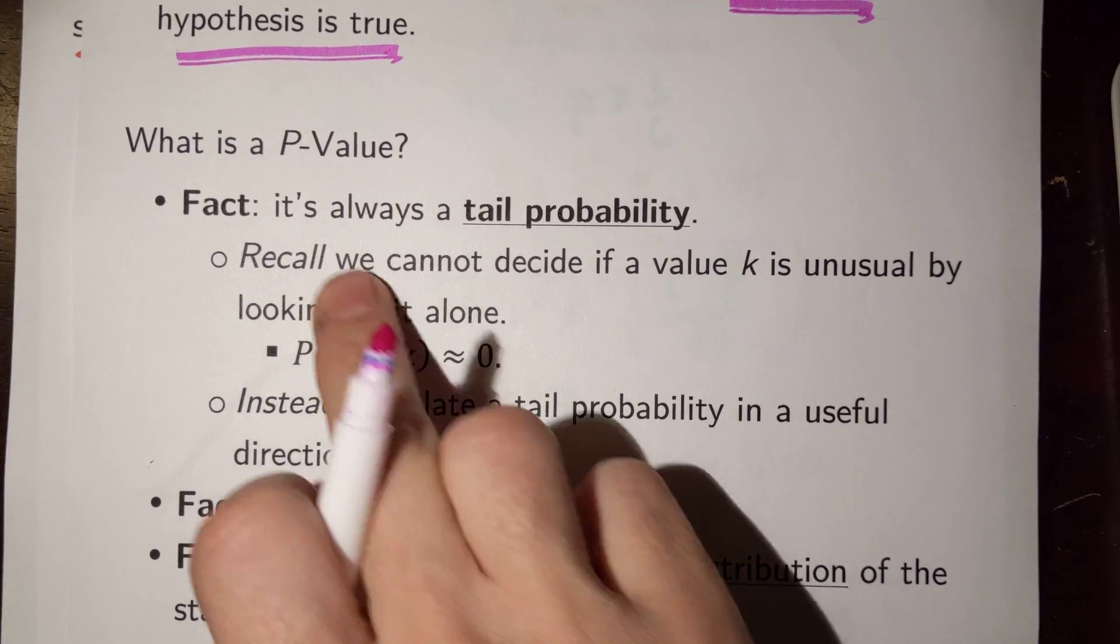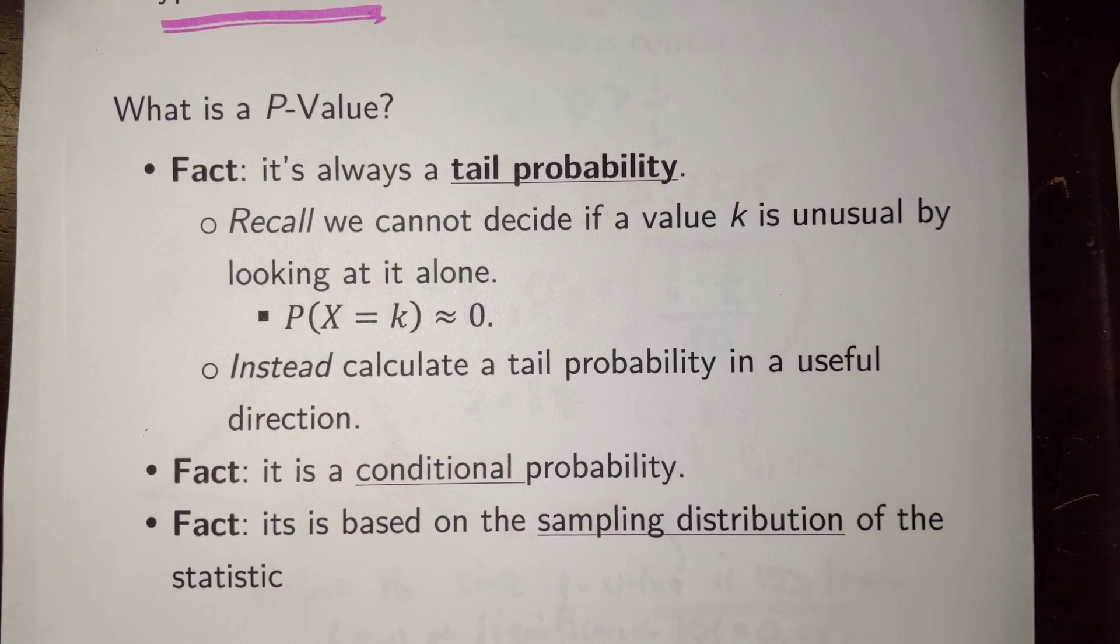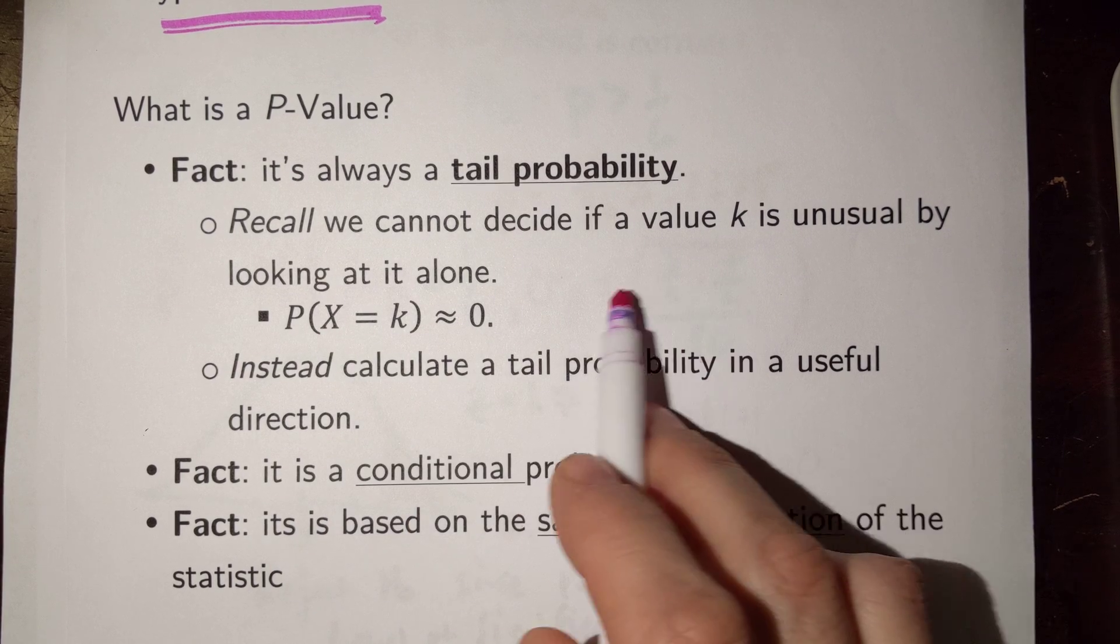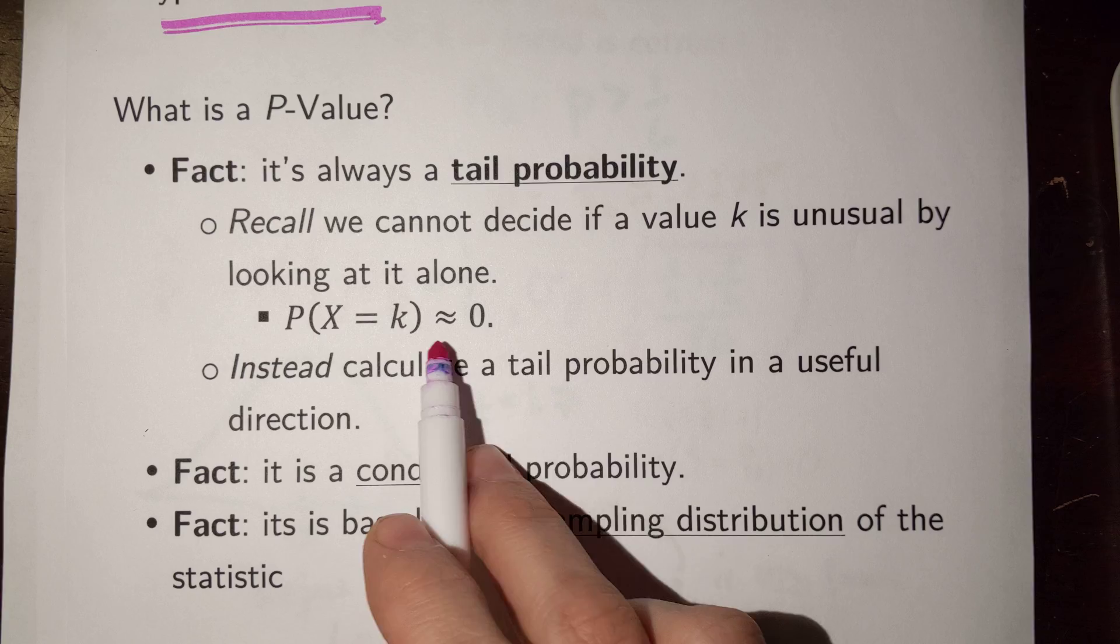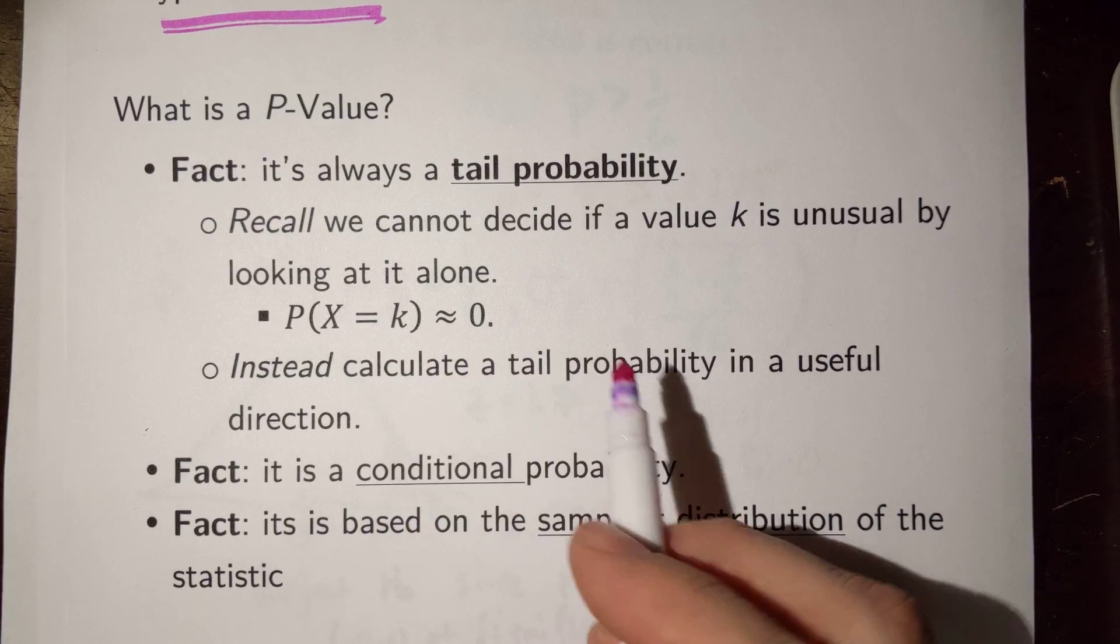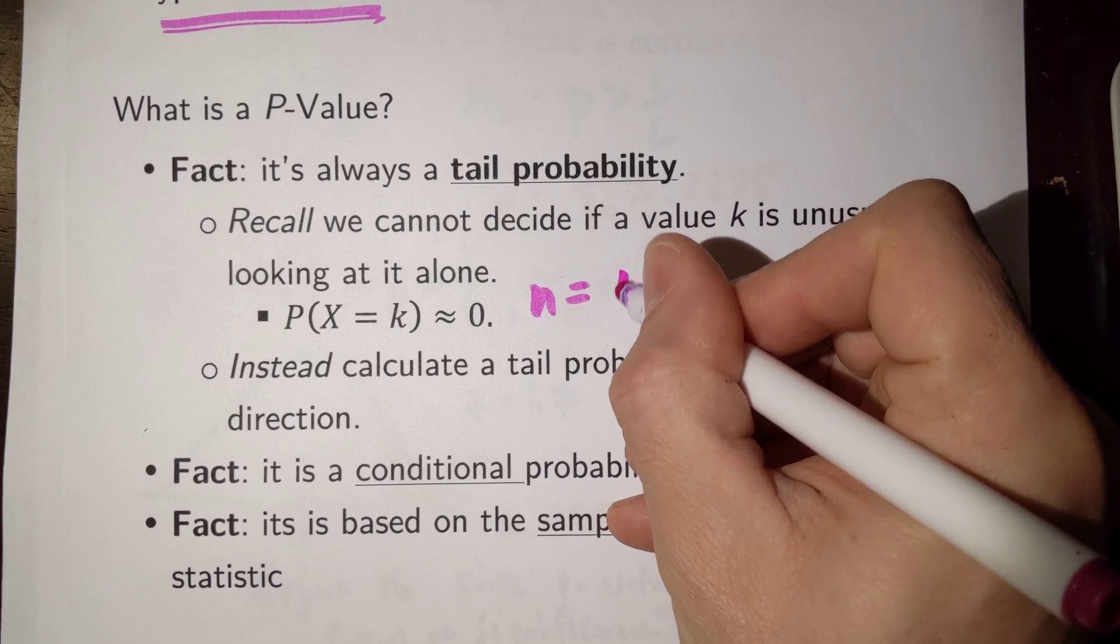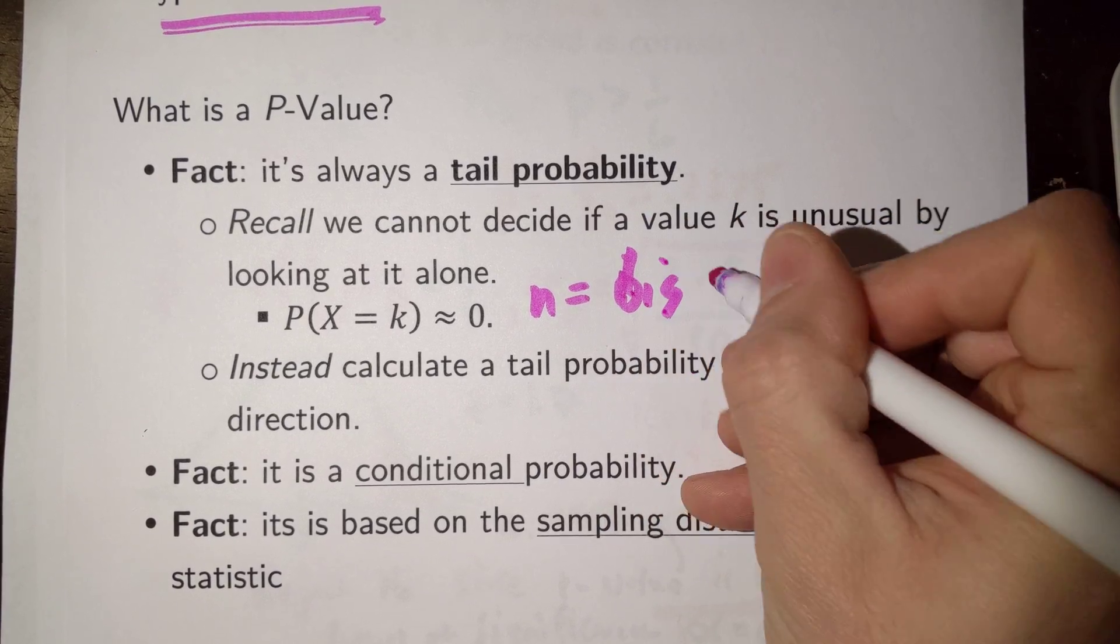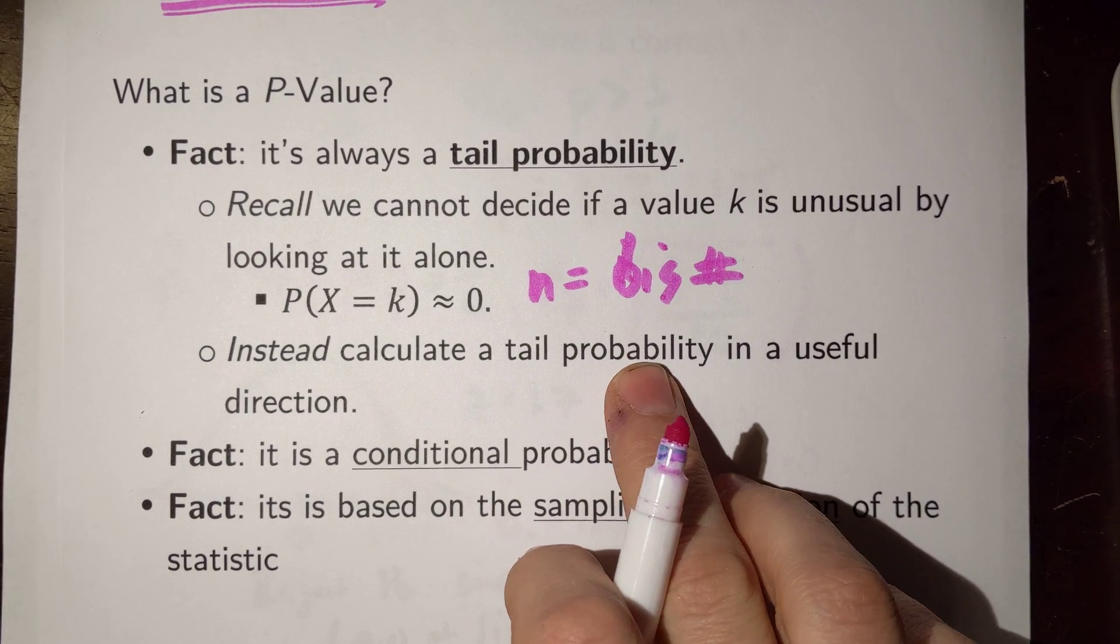Our p-value is always a tail probability. We can't calculate a p-value just based on looking at the probability of a particular value, because the probability of any particular value, if it's not zero in a continuous distribution, it'll eventually approximate zero whenever our sample sizes get large enough. Like, so, if n equals a big number, even in a discrete distribution, the probability of particular values tends towards zero.